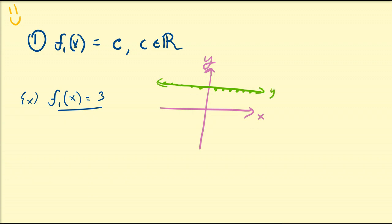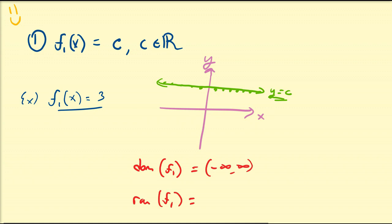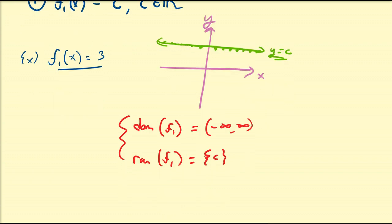In general, the graph of y = c is just a horizontal line. The domain of f₁ is going to be all real numbers, and the range of f₁ is going to be just the single number c. That's the first basic function.